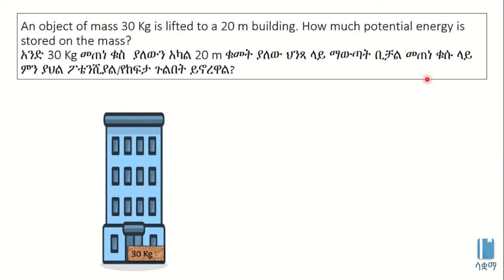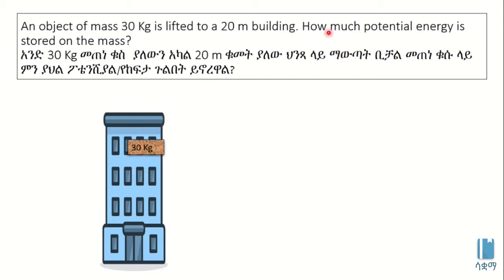Hello everyone. I'm going to show you the potential energy. An object of mass of 30 kilograms is lifted to a 20 meter building. This is how much potential energy is stored on the mass.